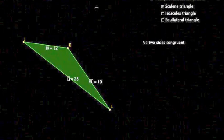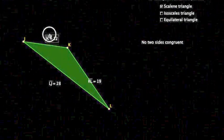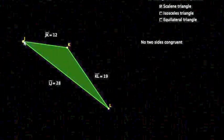We can also classify triangles by sides. Scalene triangle, no two sides are congruent. So all three of these sides have different measurements.